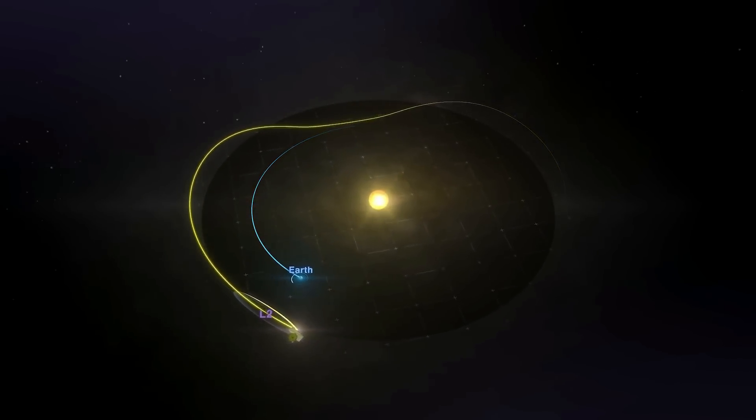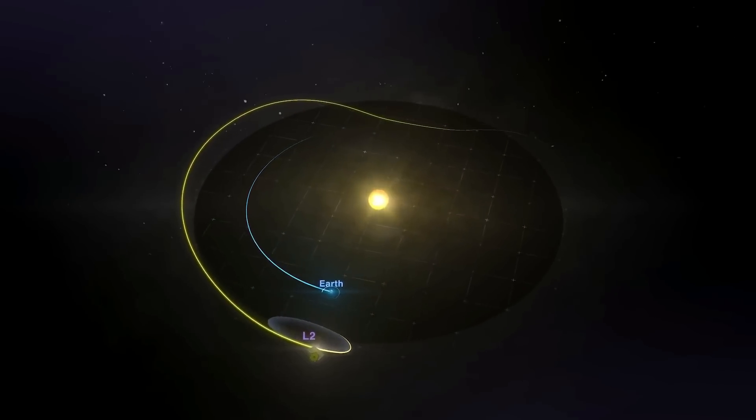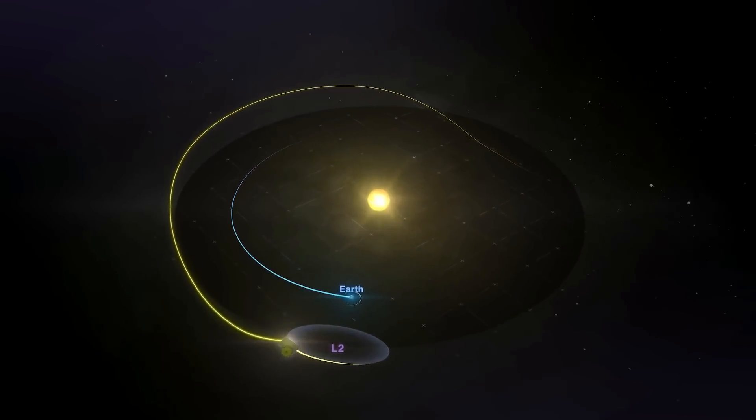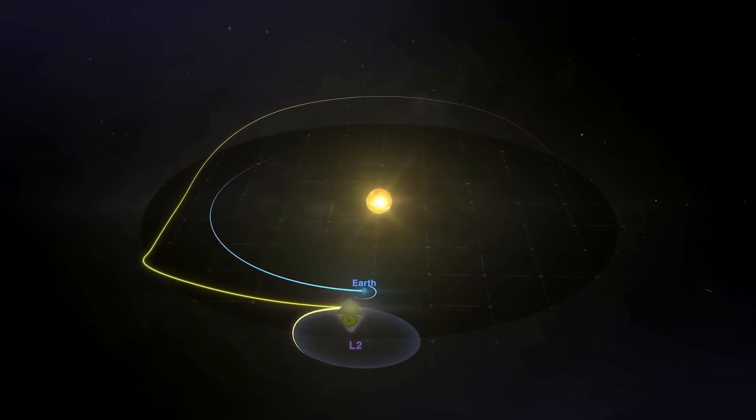This is a special point in space where the combined gravitational forces of the Earth and the Sun will keep the telescope in a fixed orbit relative to these two bodies.